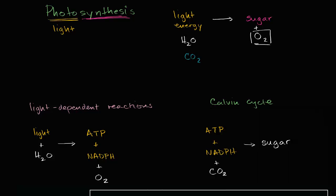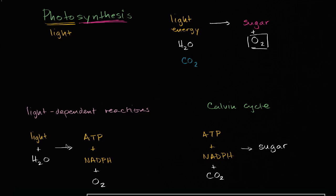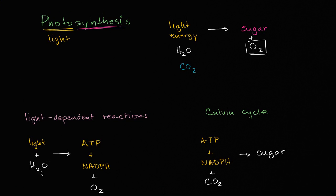We've seen in previous videos that photosynthesis can be broken down into the light-dependent reactions and the Calvin cycle. The light-dependent reactions take light as an input along with water, and we'll see the water is actually a source of electrons, and we can use that to store energy in the form of ATP and NADPH.